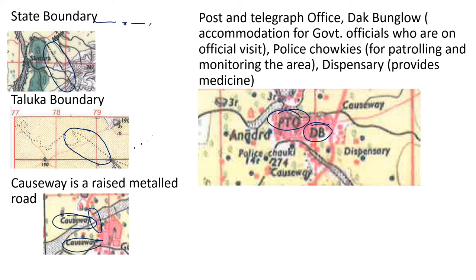Then there is police chowki. Many times you will also see PS for police station. The difference is that police chowki is mostly for patrolling and monitoring the area, but at a police station you can register your FIR and investigation will be done from there, not from the police chowki. Then there is a dispensary, which is a small hospital kind of thing where they give medicine to villagers or people living in nearby places.